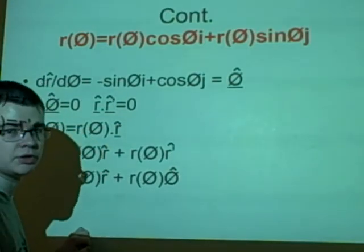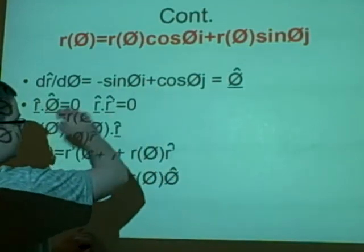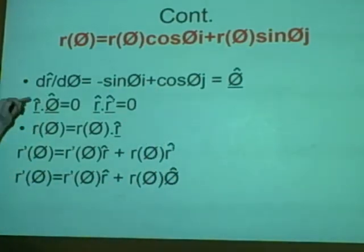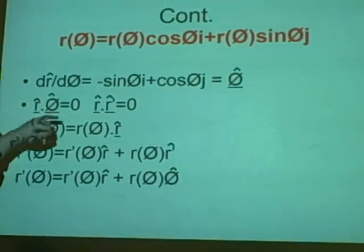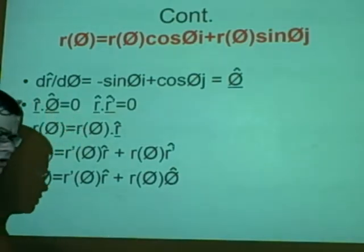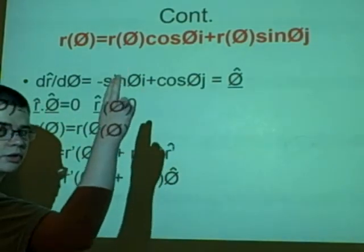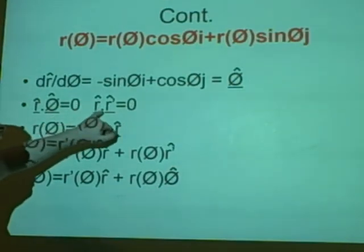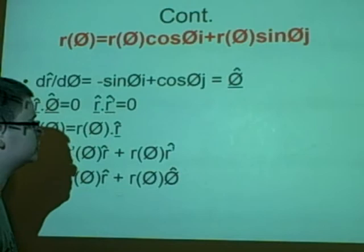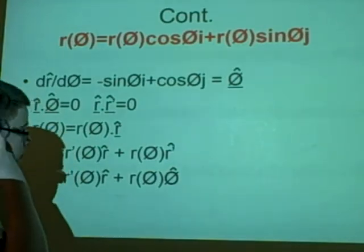Some people might realize that straight away, but that is just a simple proof. Things we know again: we know r hat times theta hat equals 0. We showed that last time. And using what we learned in the last lecture, r hat times r hat prime is 0, because we proved that last time.